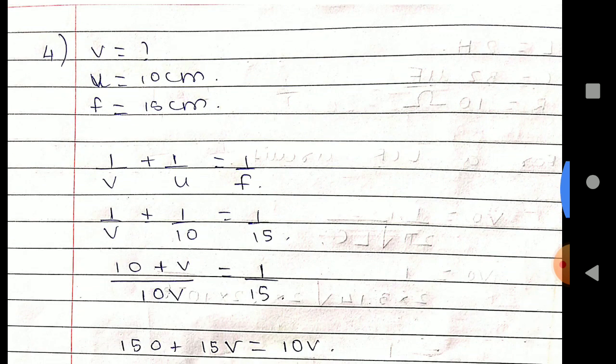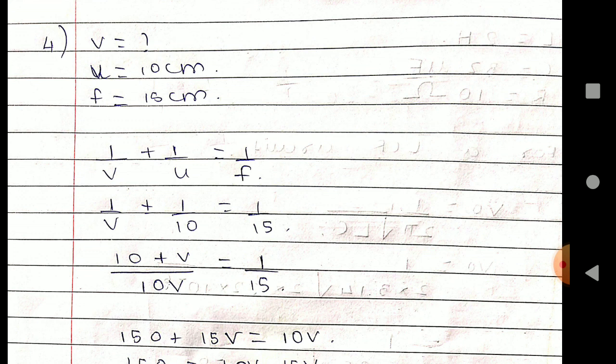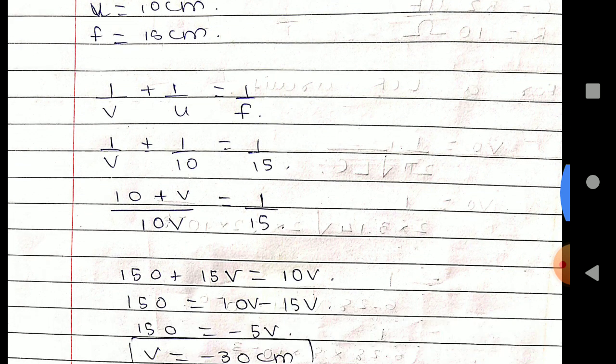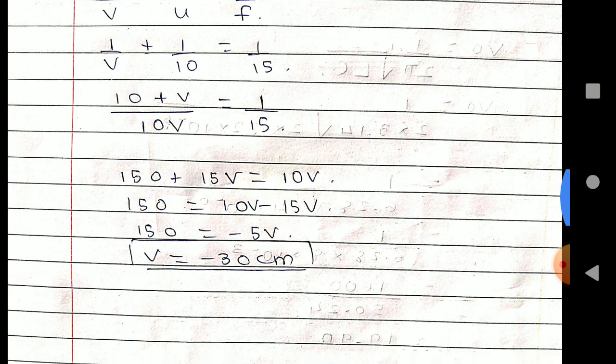Question number four, third is not given because we have to write any three. We will find V. U is given 10 centimeter, f is given 15 centimeter. One upon V plus one upon U, this is given here.